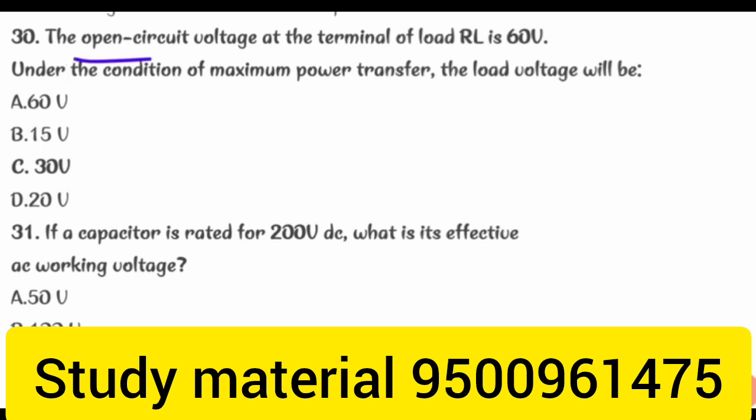The open circuit voltage at the terminal of load RL is 60 V. Under the condition of maximum power transfer, the load voltage will be 30 V.